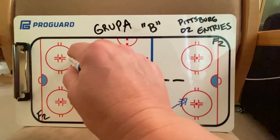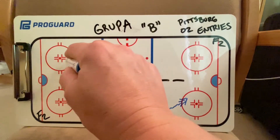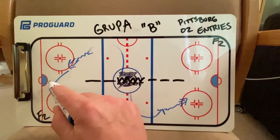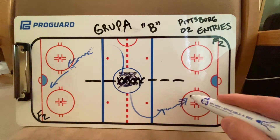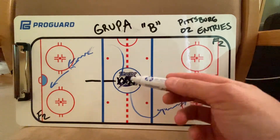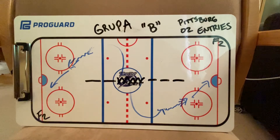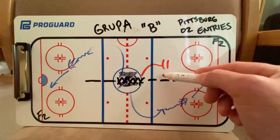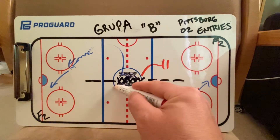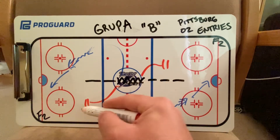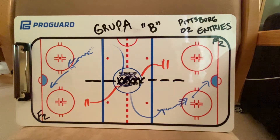Get a good hard shot on the net, then skate to the net. From the middle of the ice, two new players jump out and they become the defensemen.